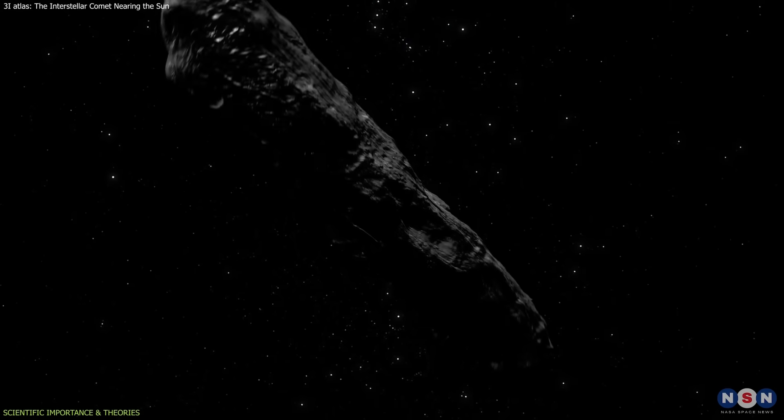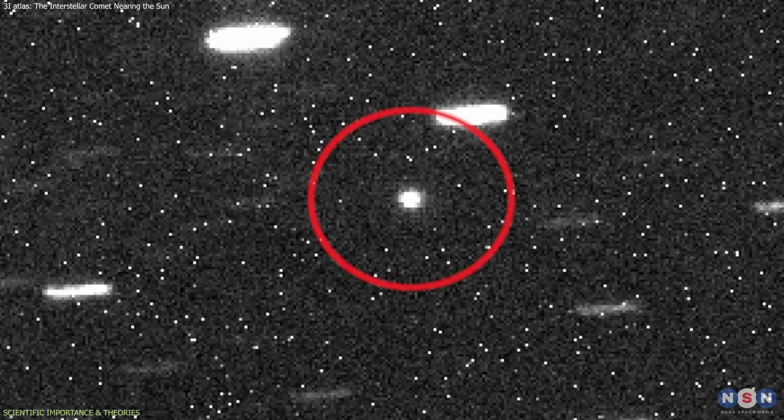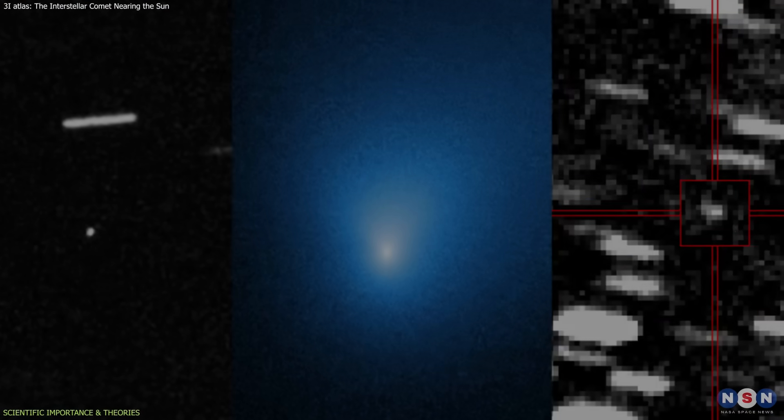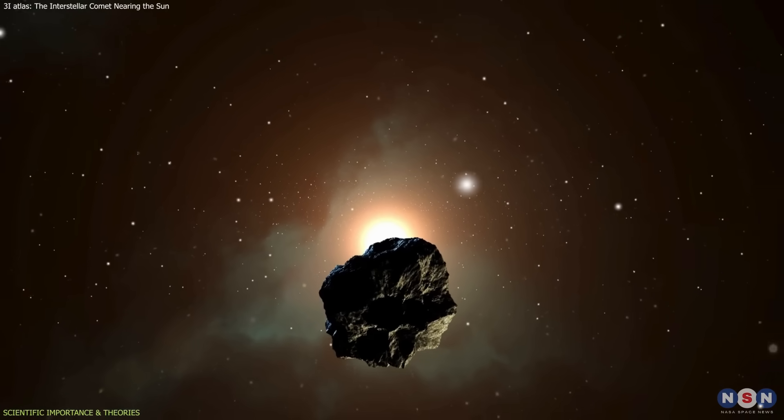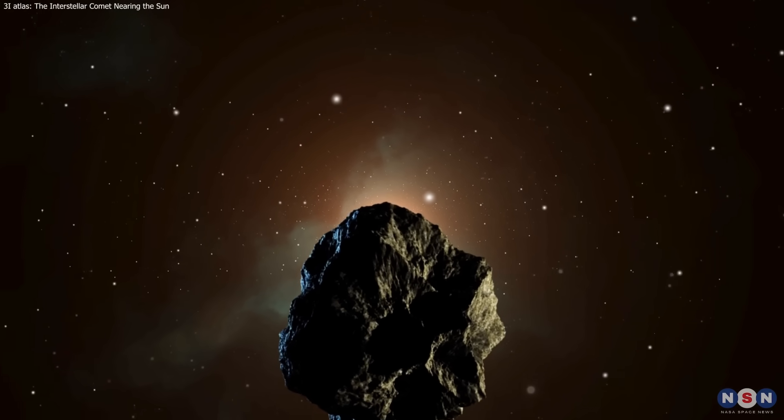Together with Oumuamua and 2i Borisov, 3i Atlas adds a third crucial data point to a young but growing field: the study of interstellar small bodies. These objects act as messengers from other star systems, revealing how planetary formation plays out across the galaxy.